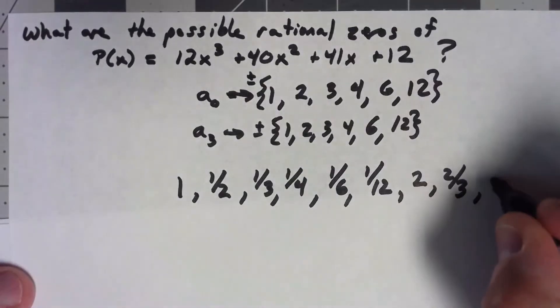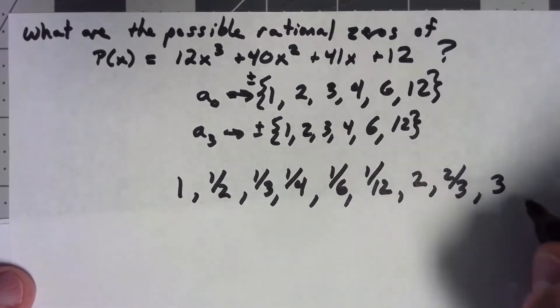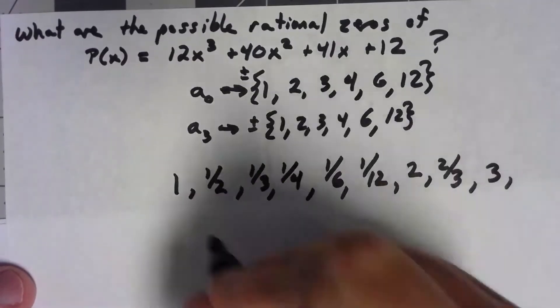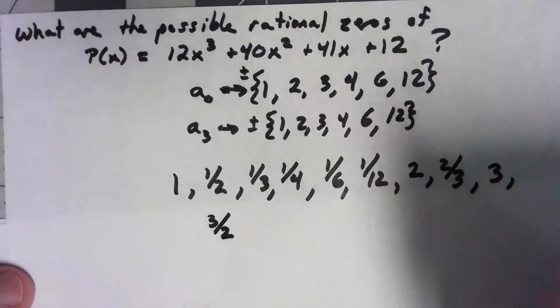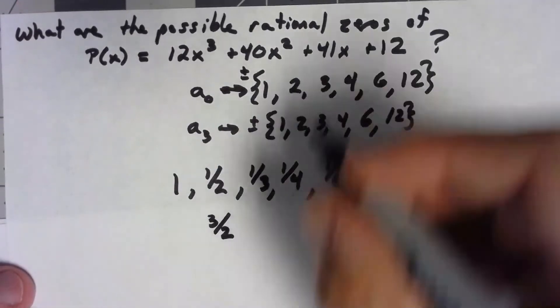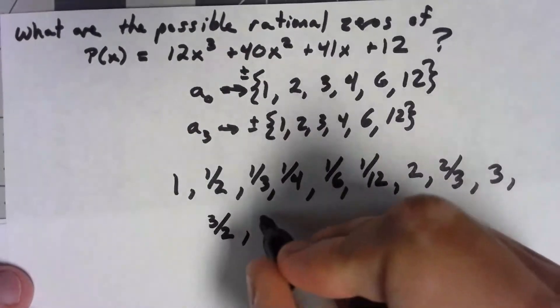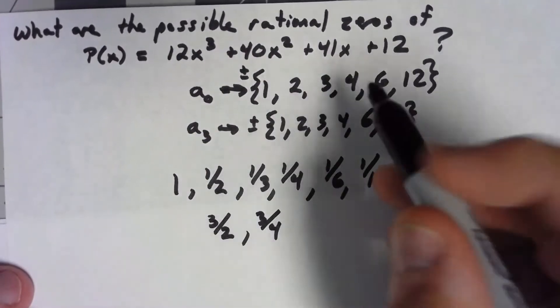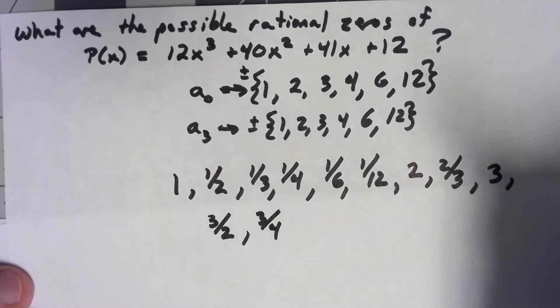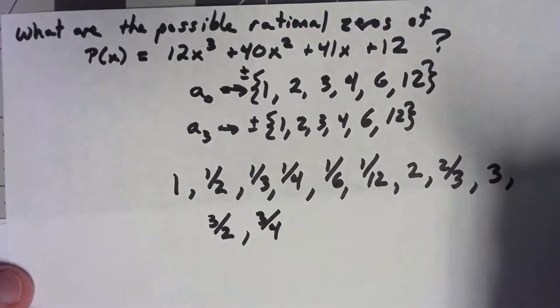3 over 1 is a 3. 3 halves is not in our list. 3 over 3 is 1, is in our list. 3 fourths is not in our list. 3 sixths is a half, is in there. 3 twelfths is a quarter, is in there.